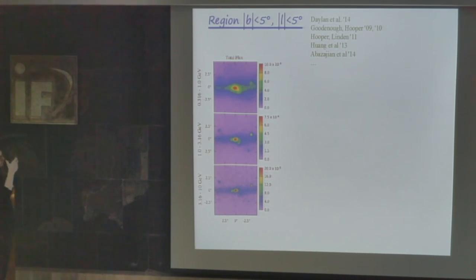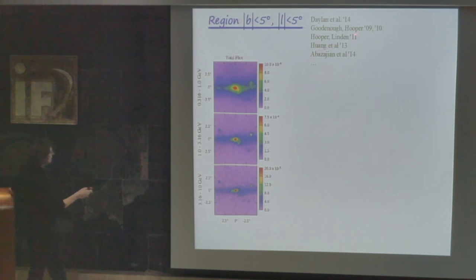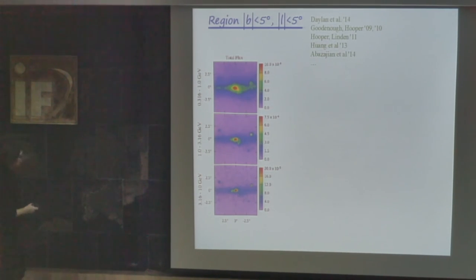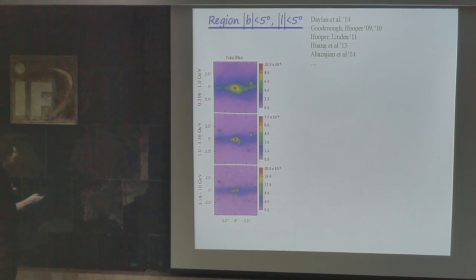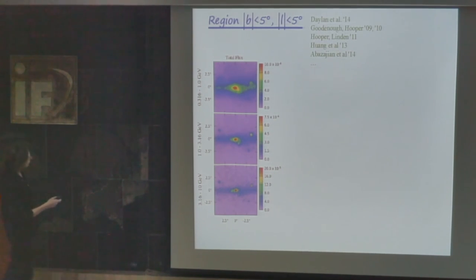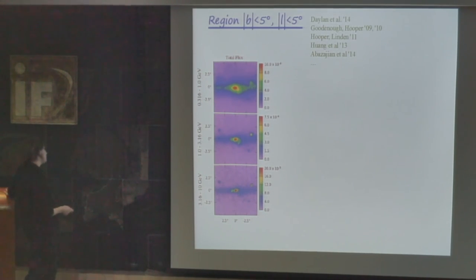The first attempt to do this with Fermi data was done by Goodenough and Hooper in 2009, but this search got a lot of attention in 2014. What these authors did was to take the region with galactic latitude below 5 degrees, obtaining a map of gamma rays at energies between 0.3 and 1 GeV, between 1 and 3.1 GeV, and between 3.1 and 10 GeV. As expected, there is quite large emission coming from the galactic center.